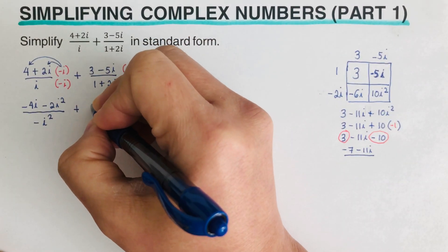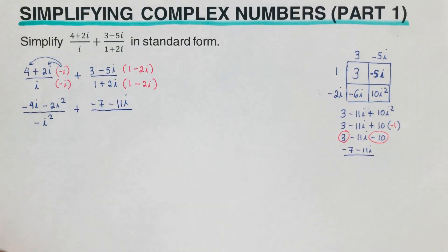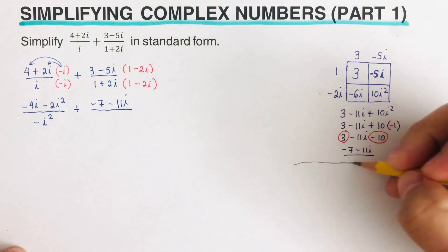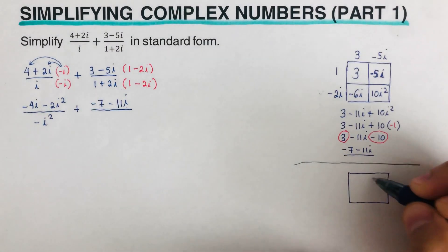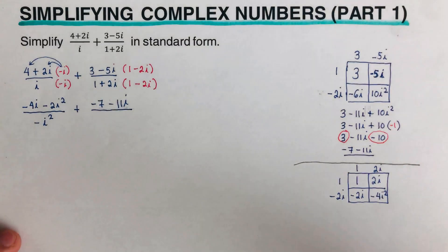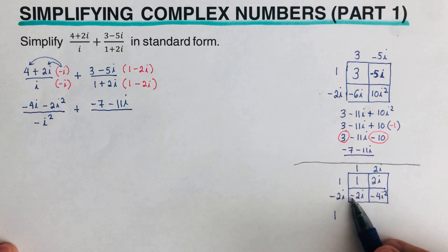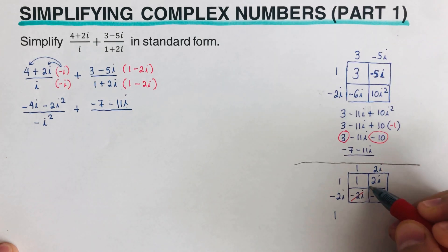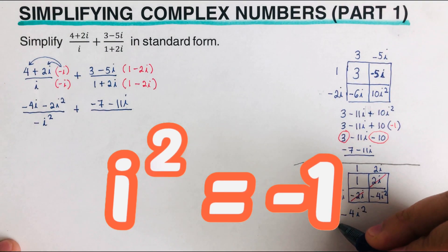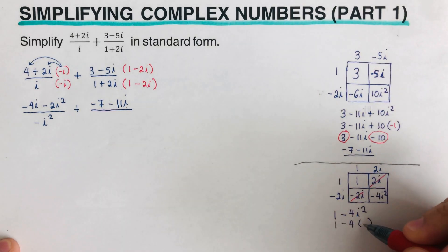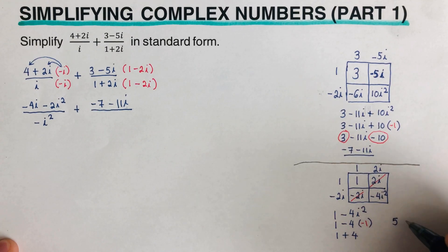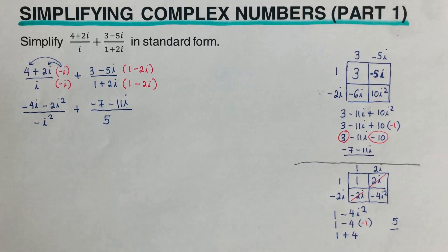For the denominator of the second fraction, we use the area model again. Working it out, the terms negative 2i and positive 2i cancel to zero, leaving 1 minus 4i squared. Since i squared equals negative one, this becomes 1 minus 4 times negative one, which is 1 plus 4, giving us 5. So the denominator is 5.